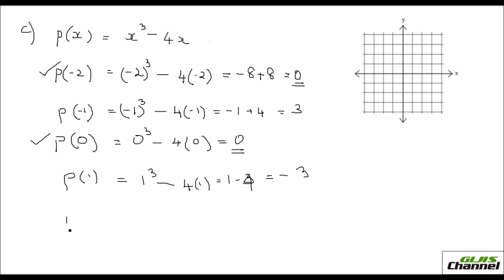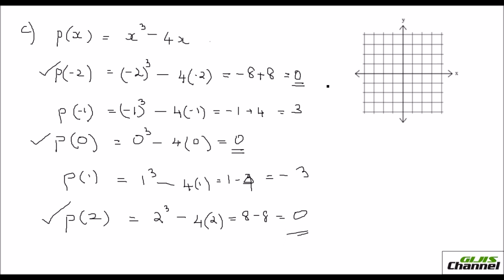Lastly, P of 2: it is 2 cubed minus 4 times 2, which is 8 minus 8, so that is again 0. You've got 3 zeros here.